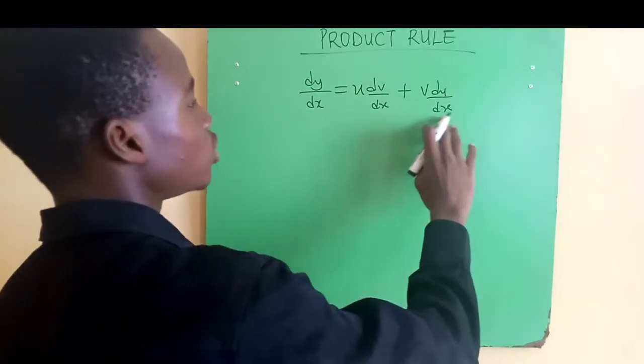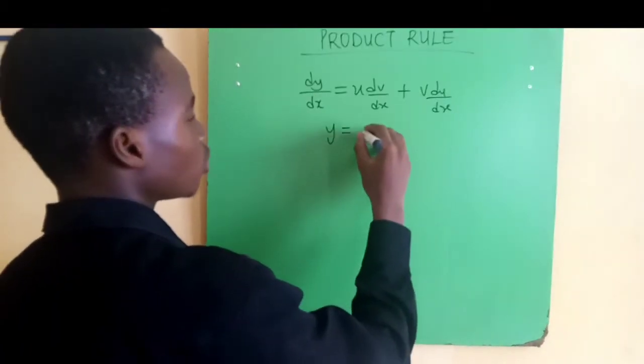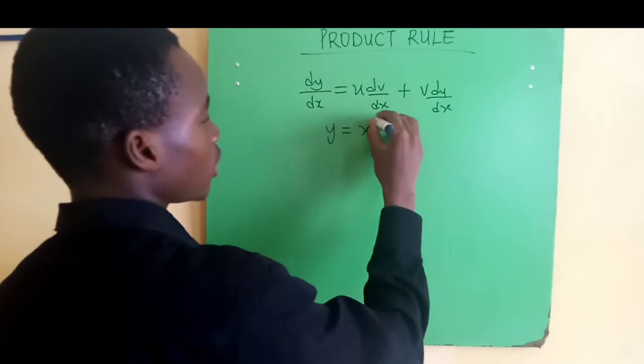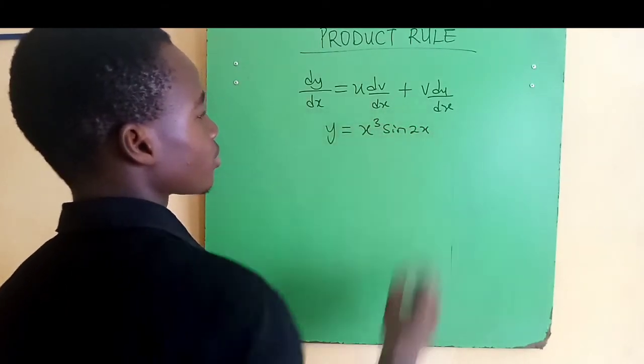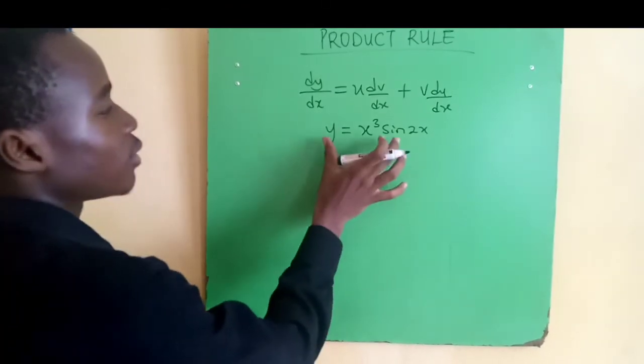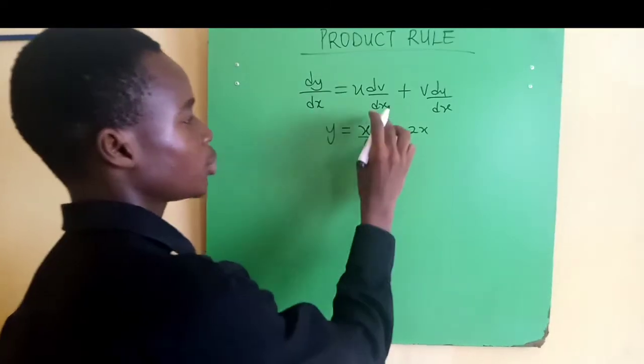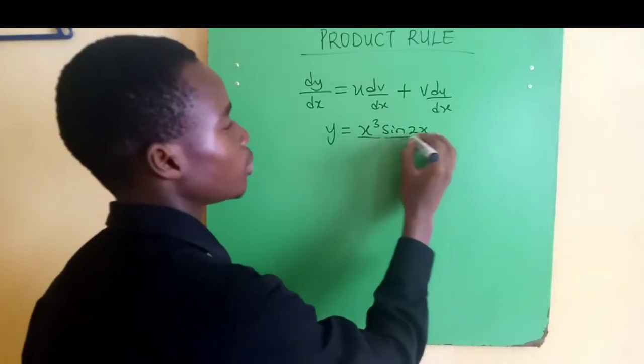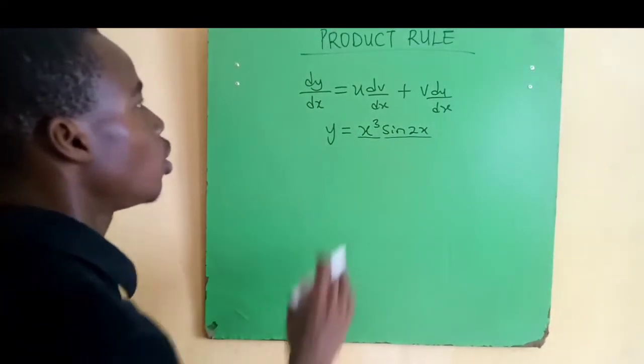U times dv/dx plus v times du/dx. So let's solve a question. You have a function y equal to x cubed times sine 2x, and we are asked to get the derivative of this function. We are going to use the product rule because we have x cubed multiplying sine 2x, so it's a product rule.